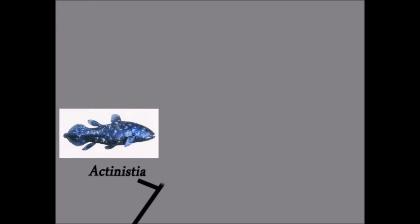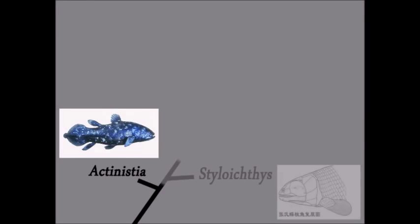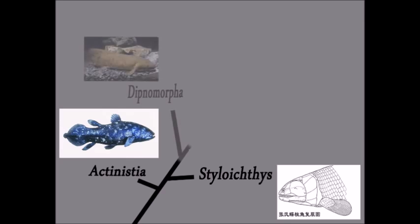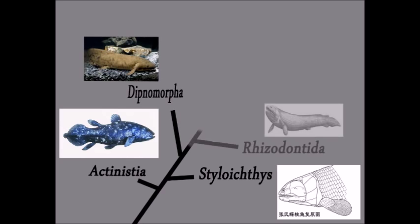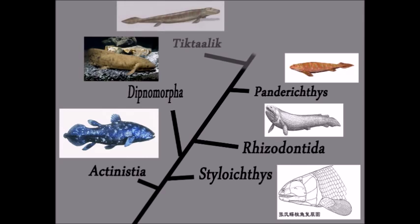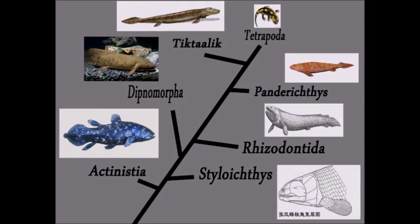Remember that cladistic analysis doesn't tell us that the end group of species are direct descendants of cladistic transitionals. Rather, it tells us that the terminal group is likely just one end group that developed from the evolutionary trend outlined by all the cladistic transitionals we find through our analysis.